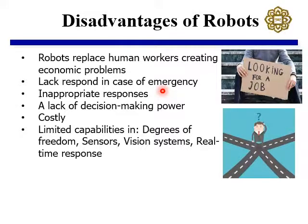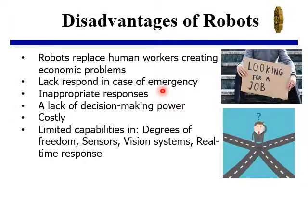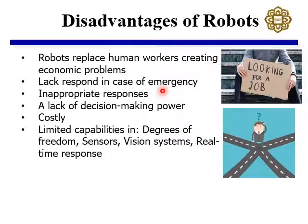The reflex response is still much faster for humans as compared to conventional industrial robotic systems. Also, industrial robots usually do not come with any sort of decision-making capability.